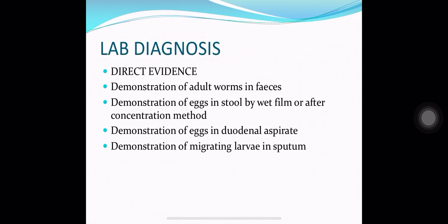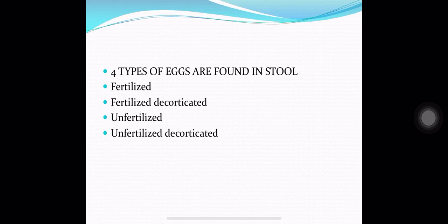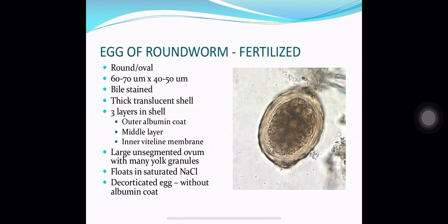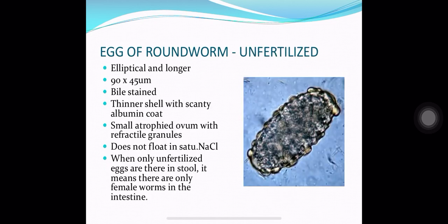In lab diagnosis, both direct and indirect evidences can be used. In direct evidence: worms can be demonstrated in feces; eggs demonstrated in stool by wet film or concentration methods; eggs demonstrated in duodenal aspirate; migrating larvae demonstrated in sputum. Four types of eggs are found in stool: fertilized eggs, fertilized decorticated eggs, unfertilized eggs, and unfertilized decorticated eggs. Fertilized eggs have a thick translucent shell with three layers and a large unsegmented ovum inside. Unfertilized eggs are longer, elliptical, about 90 micrometers, bile stained, with an atrophied ovum inside.